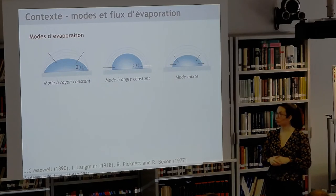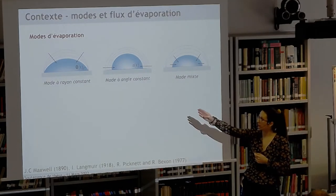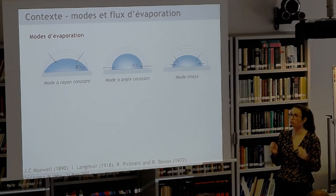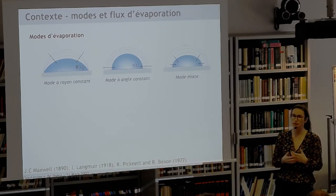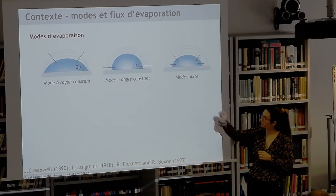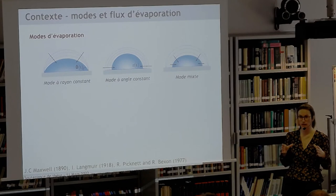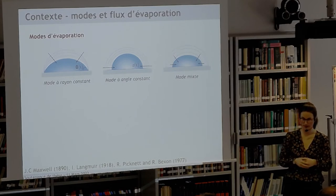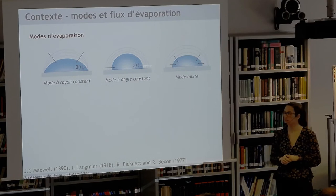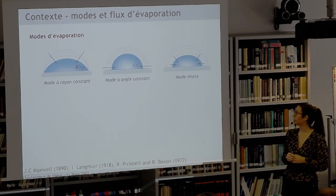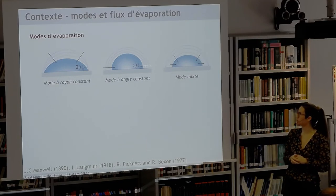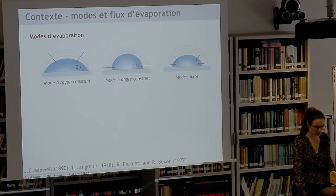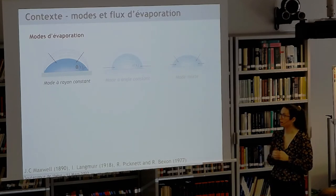Il existe différents modes d'évaporation pour une goutte sessile. Le premier est le mode à rayon constant : la ligne triple reste fixe sur le substrat tandis que l'angle de contact diminue — ce mode apparaît sur des substrats rugueux. Le second est le mode à angle constant : le rayon décroît au cours du temps tandis que l'angle reste fixe — ce mode apparaît sur des substrats lisses. Enfin, il existe un mode mixte, combinaison des deux précédents. Dans la thèse, on a étudié les deux premiers modes ; dans cette présentation, on se focalisera sur le mode à rayon constant.